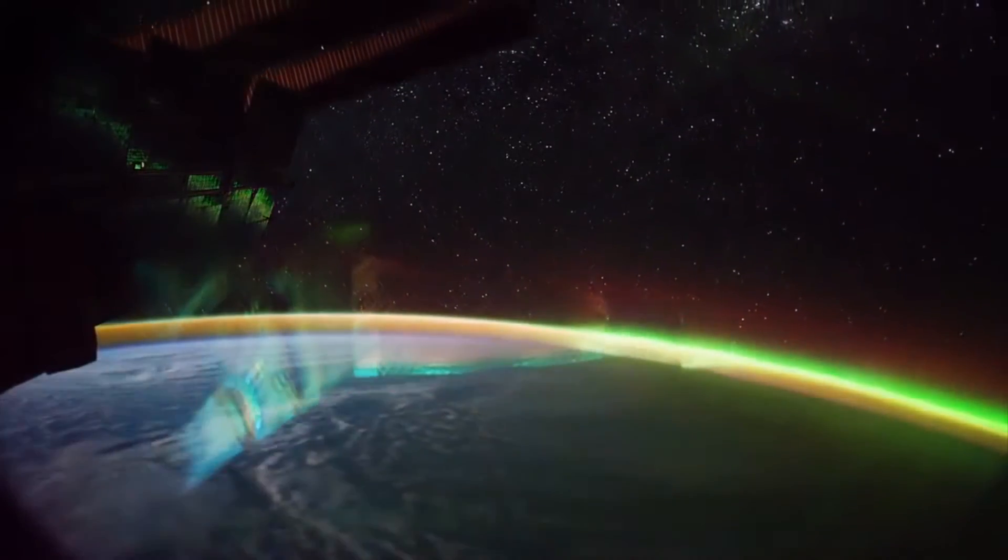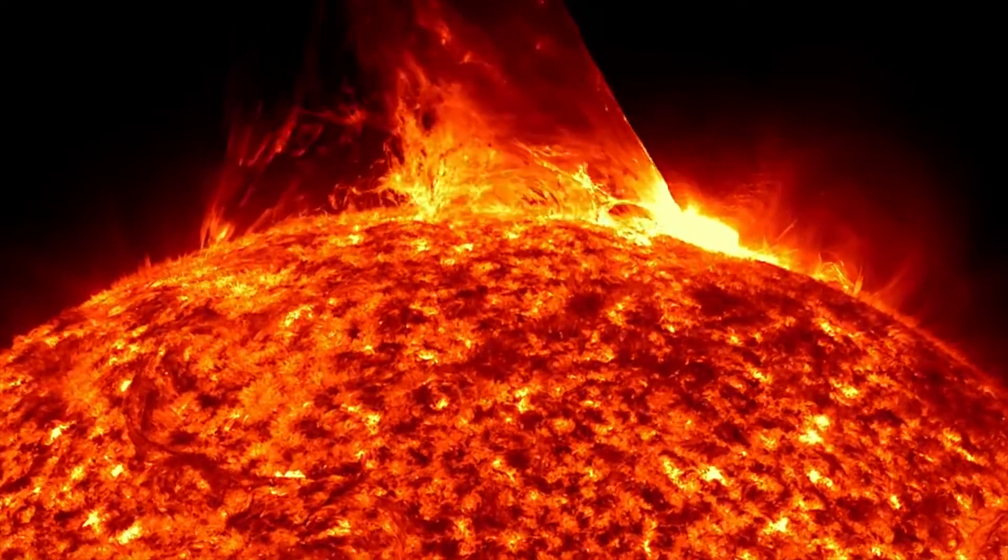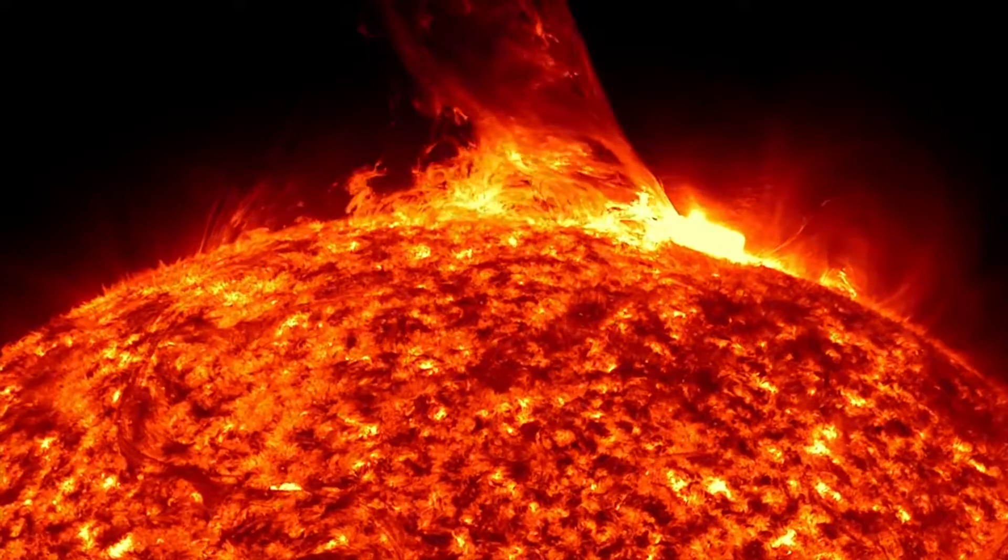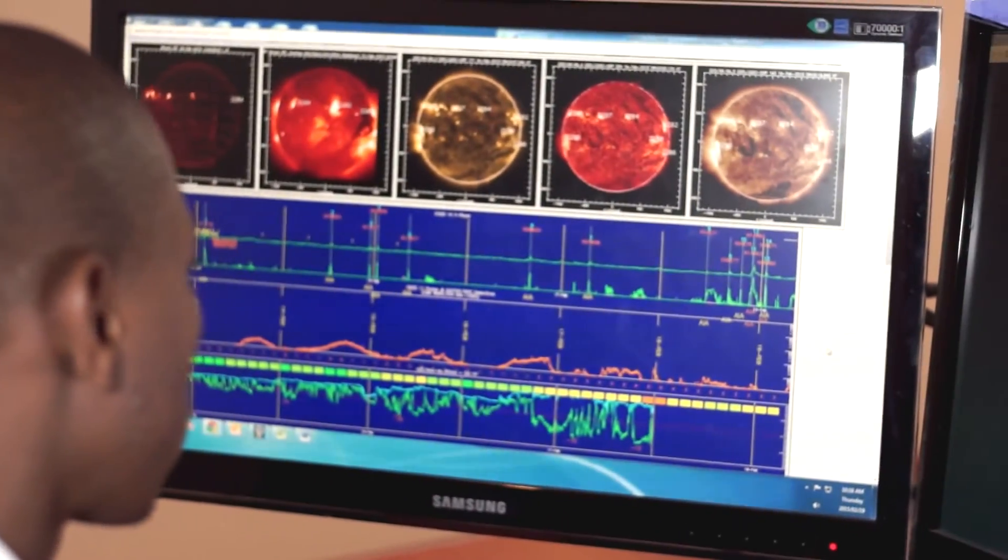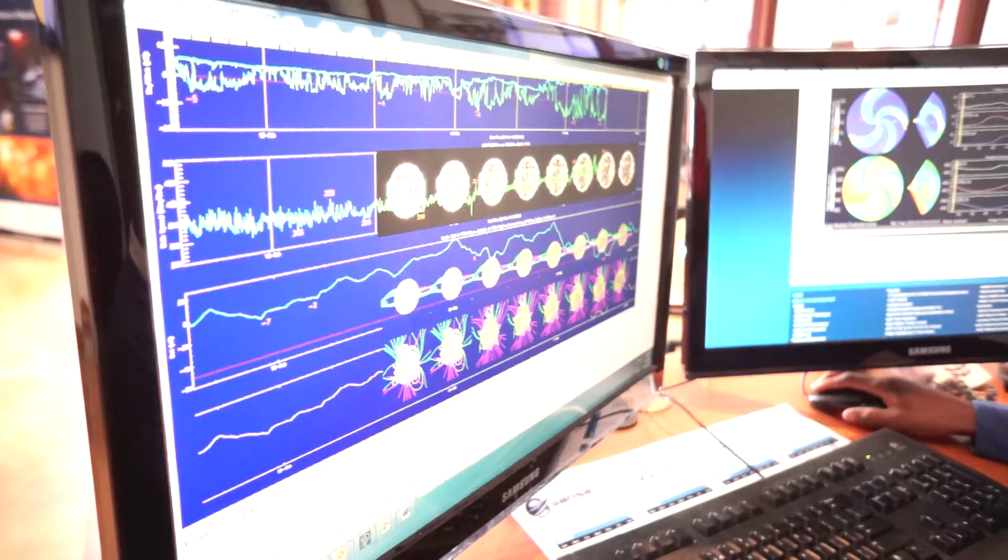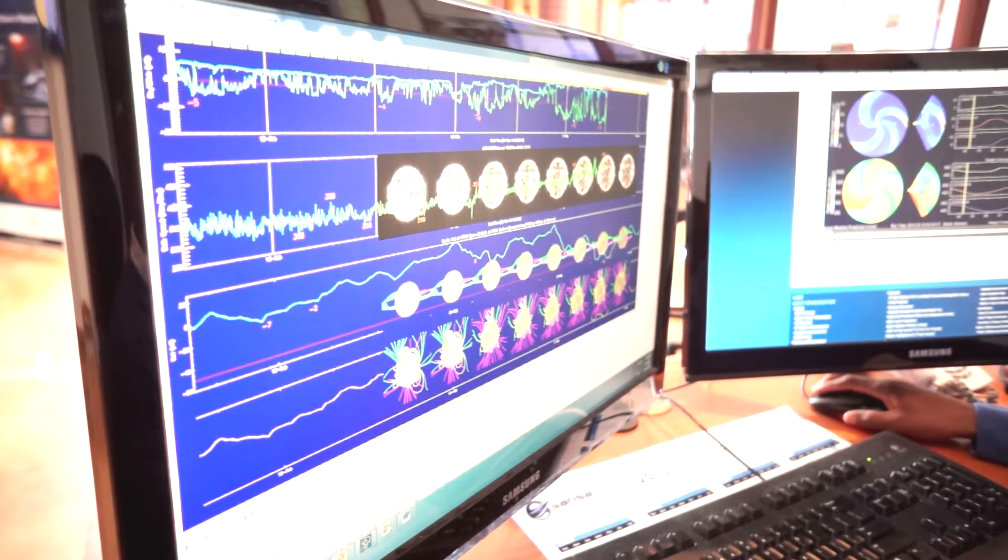In the Space Weather Centre, we monitor the Sun, we use the space weather models to predict when the impact is going to be on Earth and then we estimate as well the arrival time and then we will send out the warning messages to the people who will be affected by space weather events.